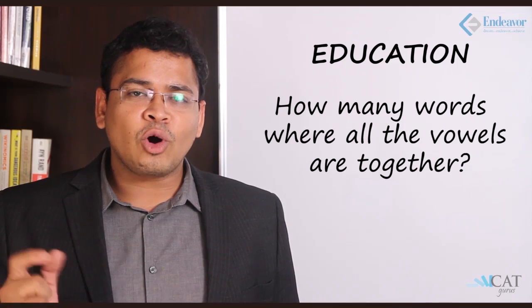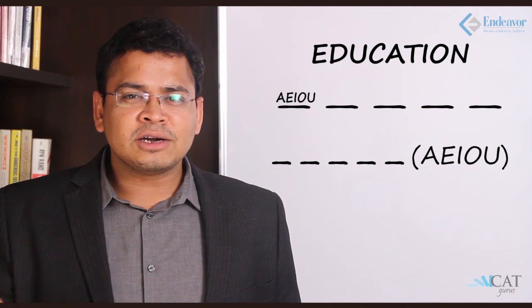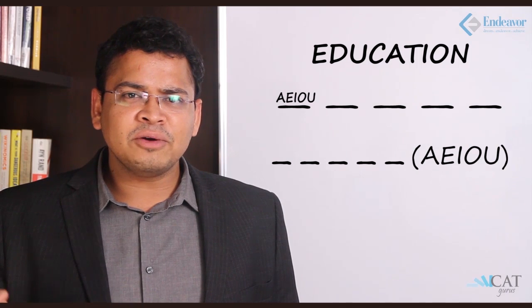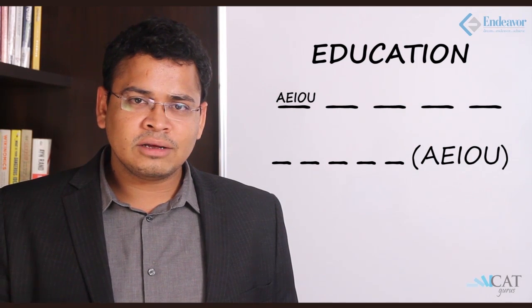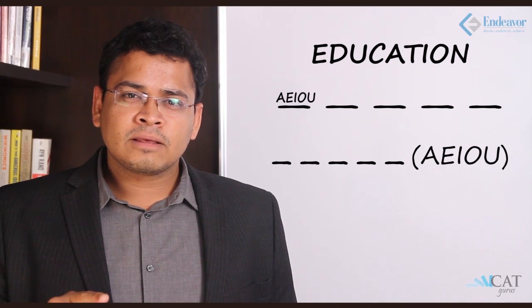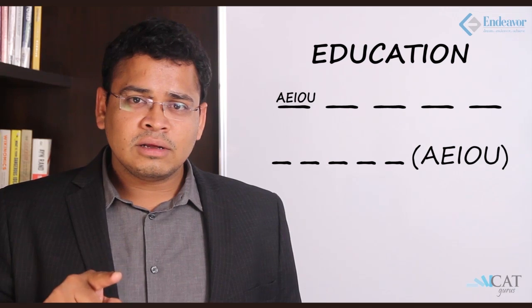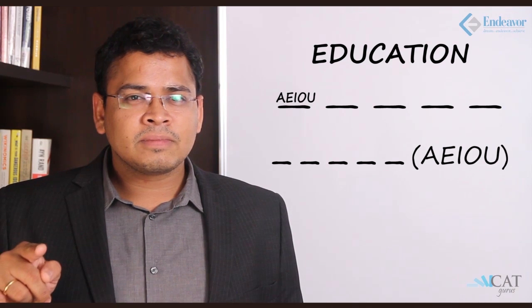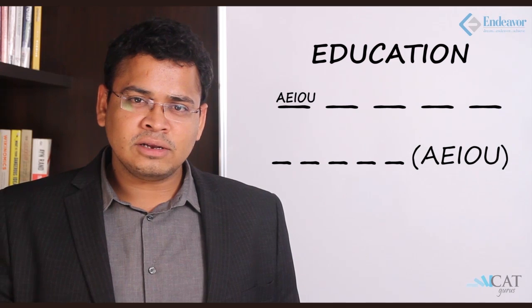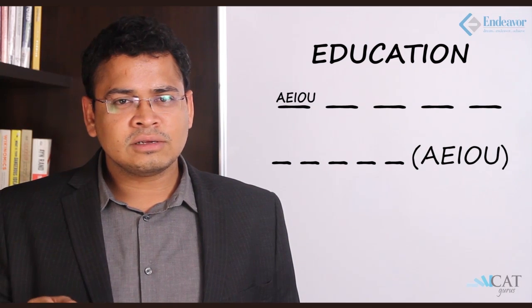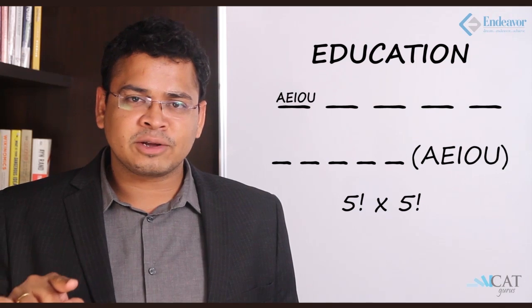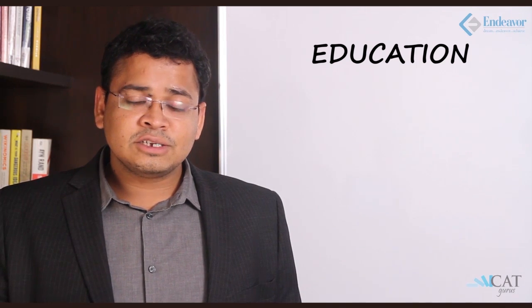Moving further: how many words are possible where all the vowels are together? The word 'education' has five vowels — A, E, I, O, U — which together make one unit. Apart from that there are four consonants, so four alphabets plus this one unit make five units. The consonants can be arranged in five factorial ways, and the five vowels within their unit can be arranged in five factorial ways. So the answer is five factorial into five factorial.